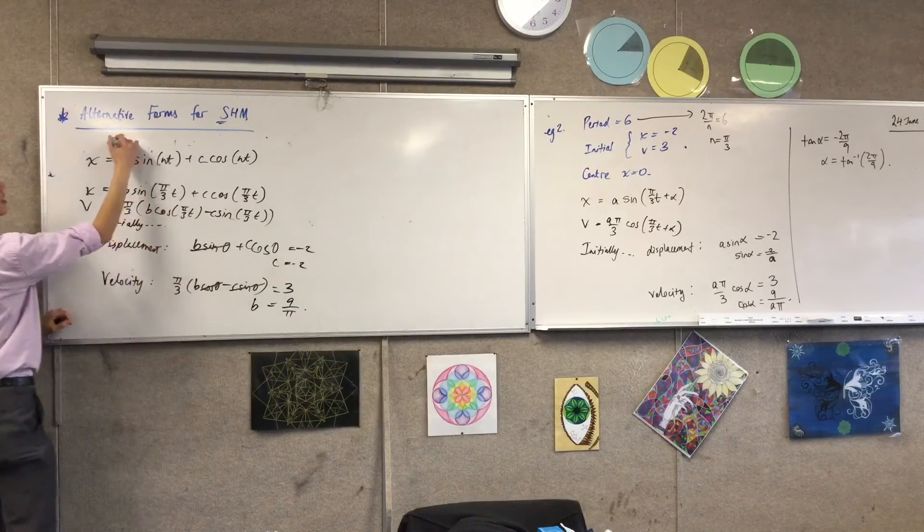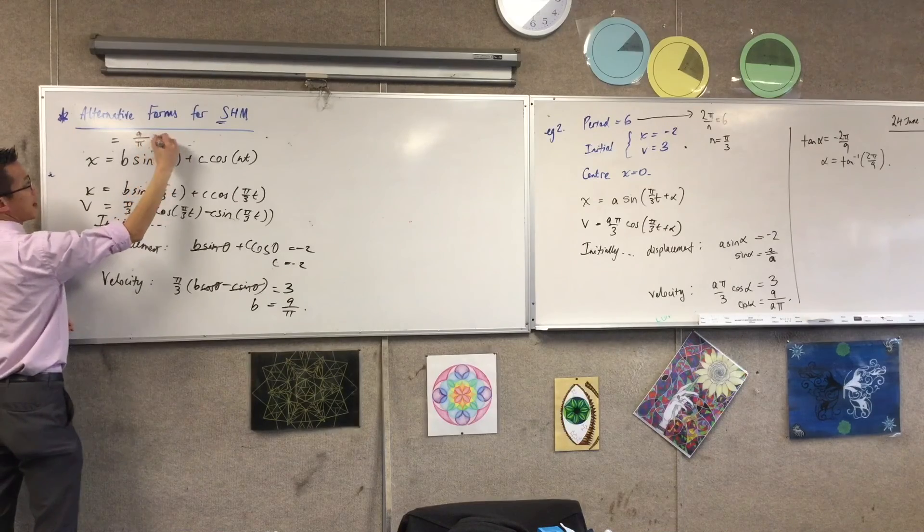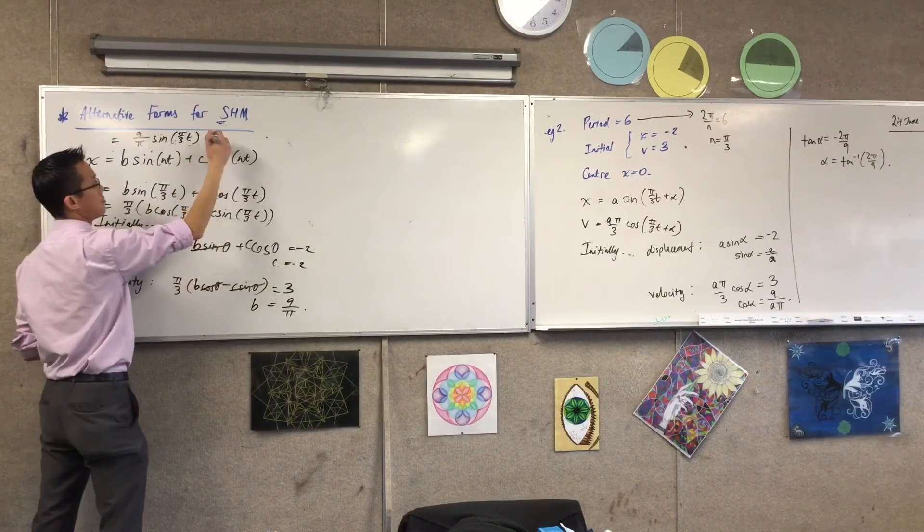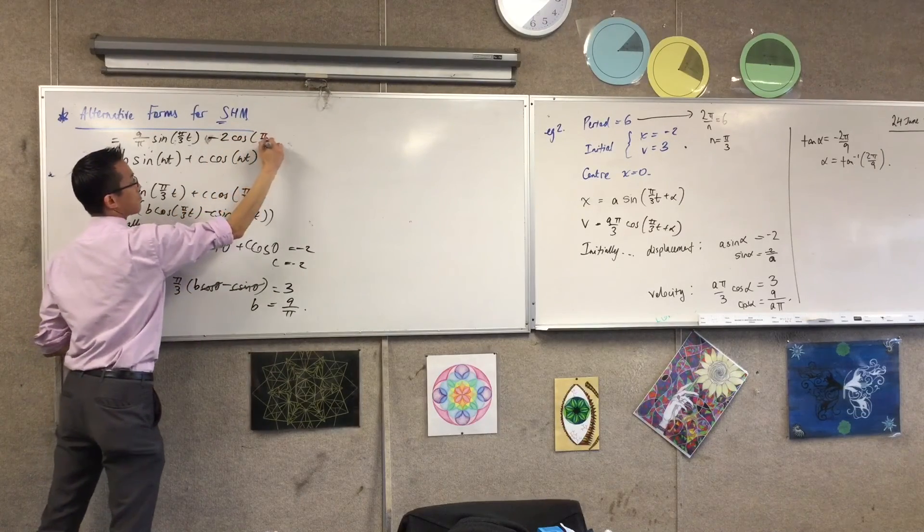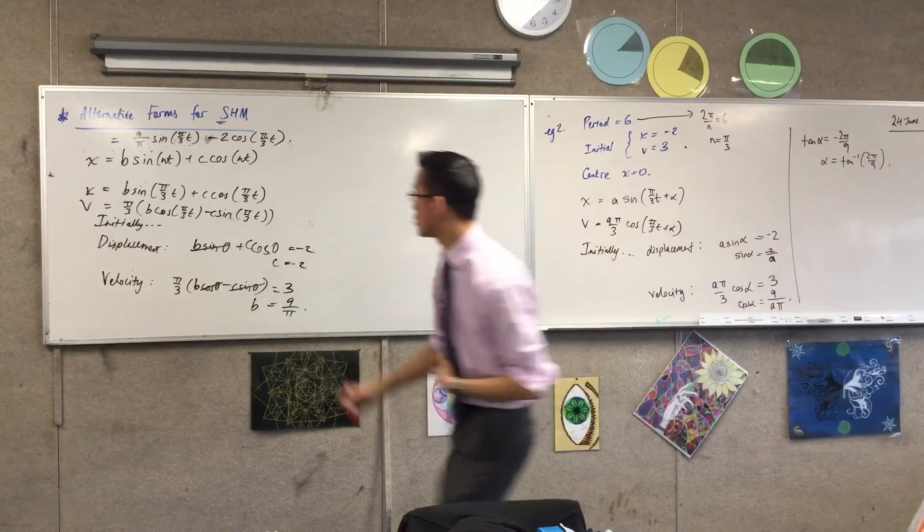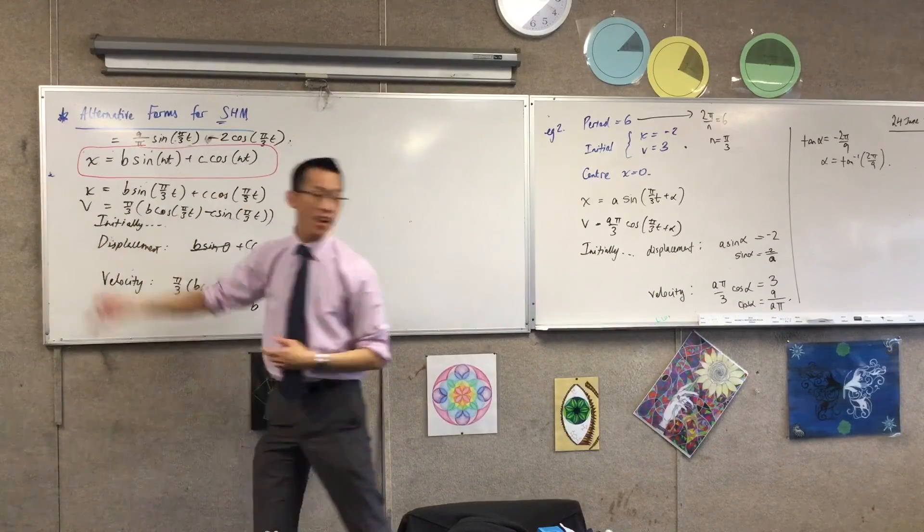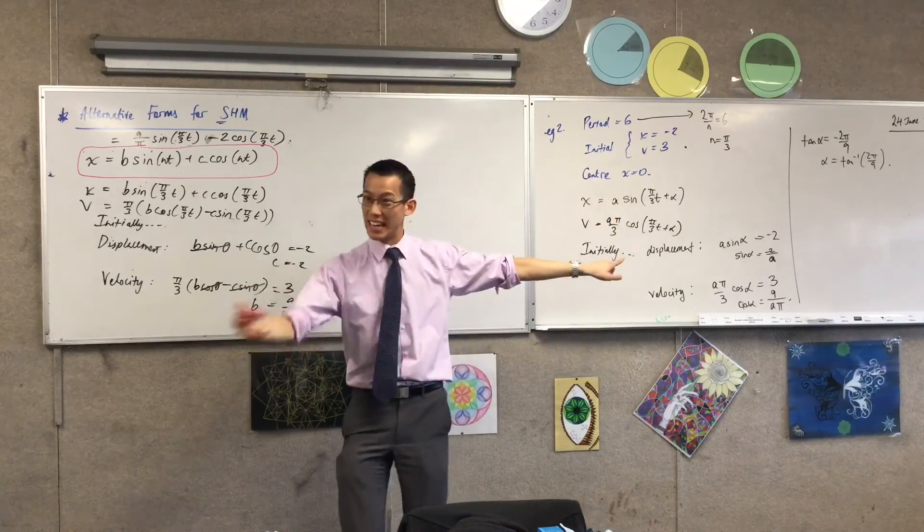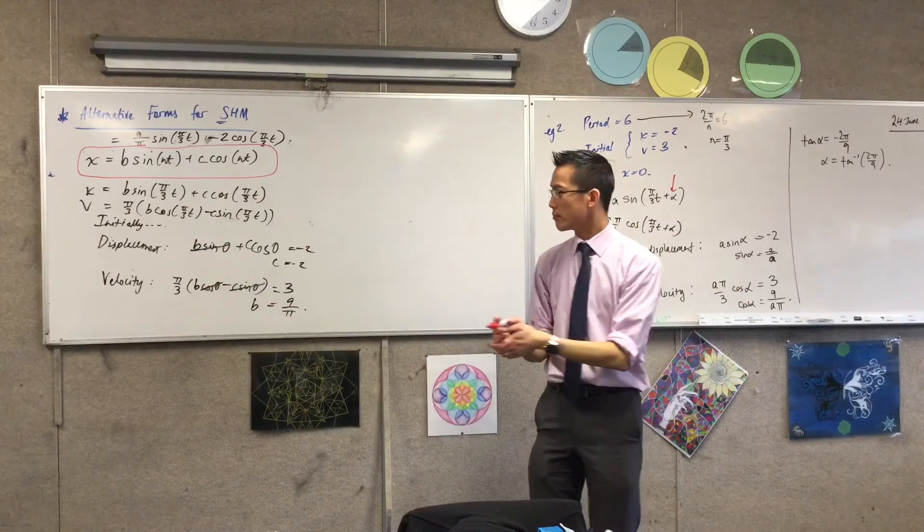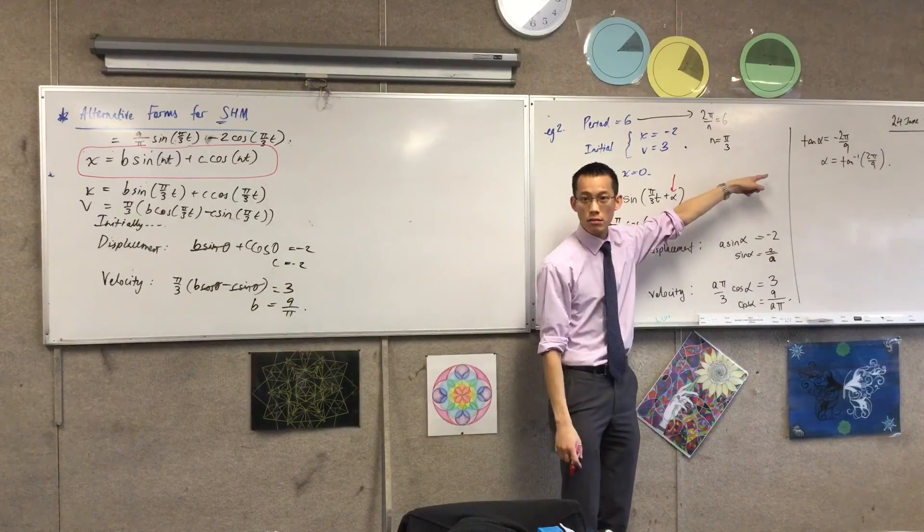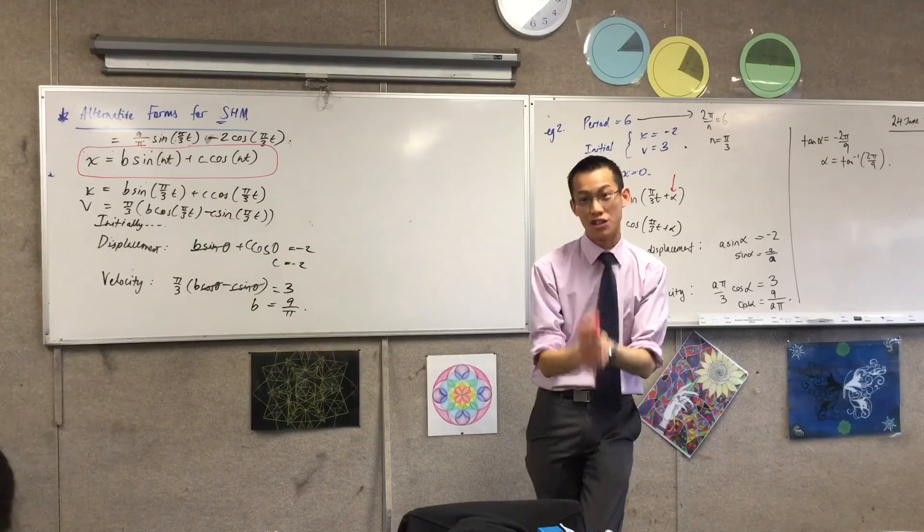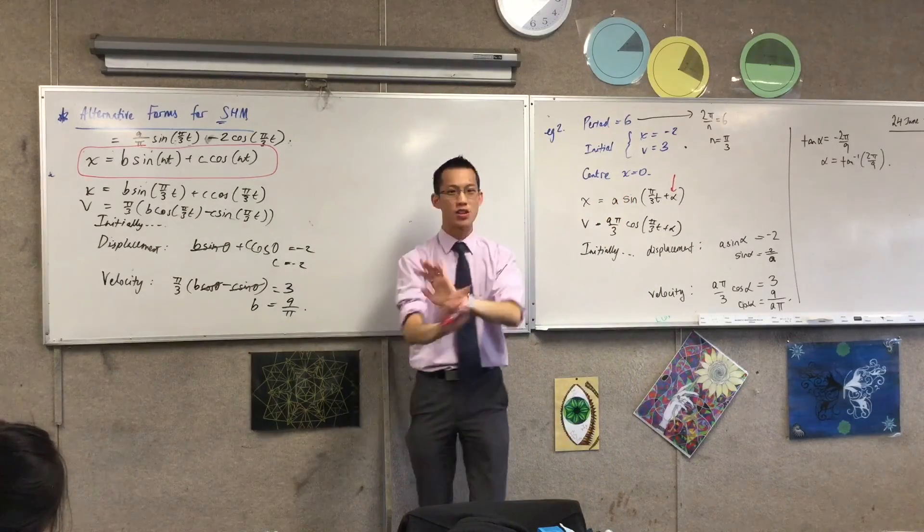Have a look at that. x equals 9 on π sine π on 3t minus 2 cos π on 3t. So this is why they will sometimes hand you an equation like this instead of the one you're used to. And what they're trying to get away from is the phase shift because it's gross sometimes. So you do this. That's alpha. You do that and then you do this. Well, this is me showing you finding alpha is sometimes terrible and you don't want to do it. So that's why sometimes we use this because no alpha is required.